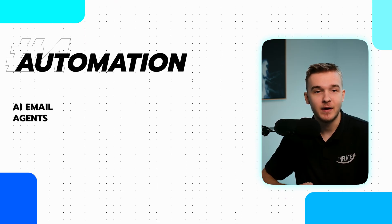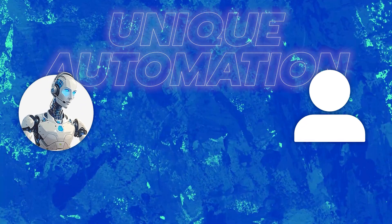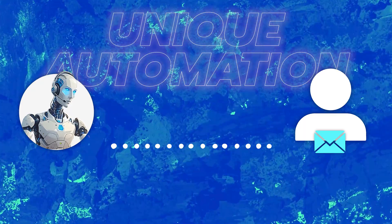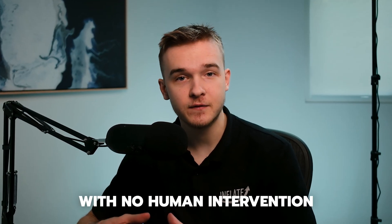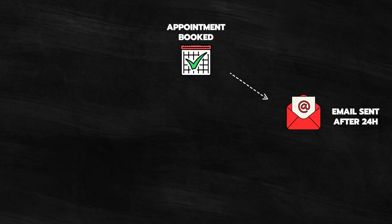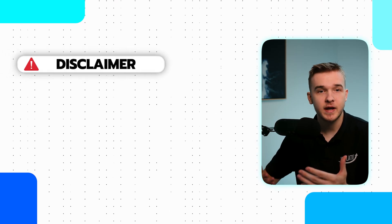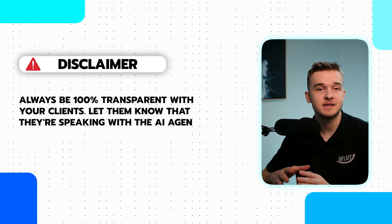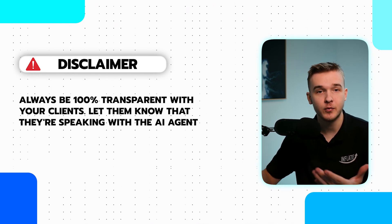For number four, we have AI email agents. This is a unique automation in which we essentially email new leads to an AI assistant to help with any inquiries. The agent fully responds by AI with no human intervention at all. When someone books an appointment with us, 24 hours later we will send them an email that says: 'Hi, I'm an AI agent from Inflate AI. I can help answer any questions you have about our services.' So we don't try to pretend they are speaking with a human — we are honest and upfront about it, essentially like a chatbot but a bit more formal.